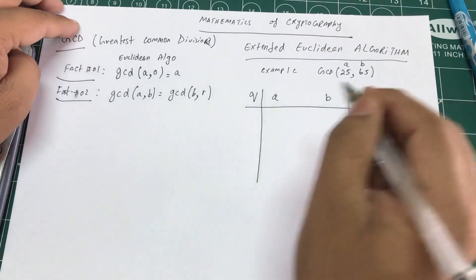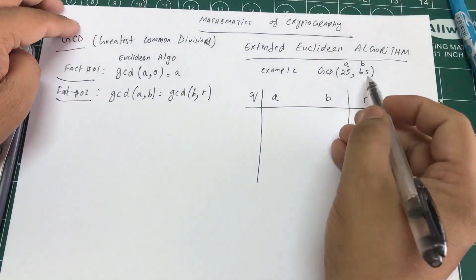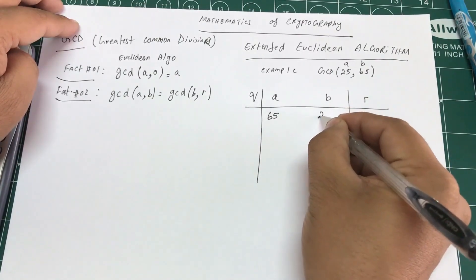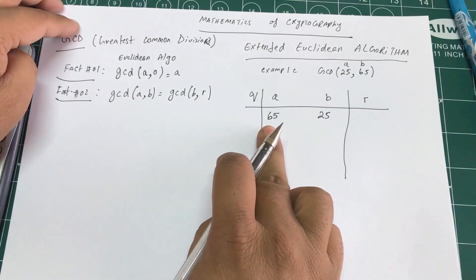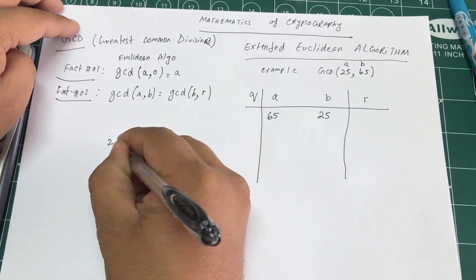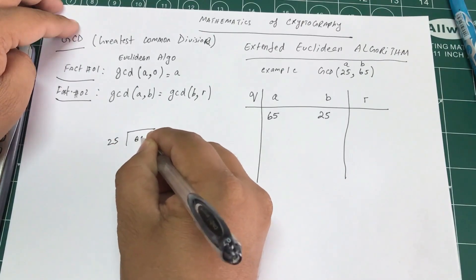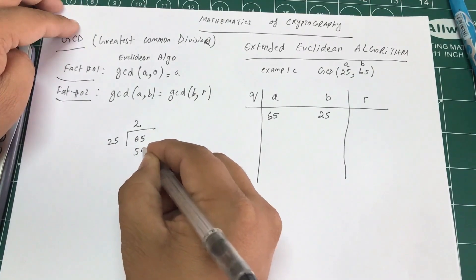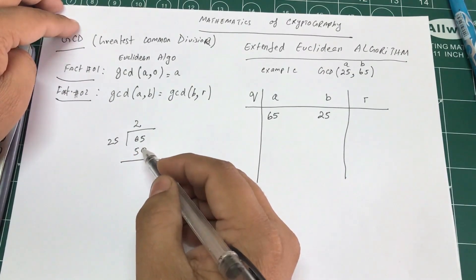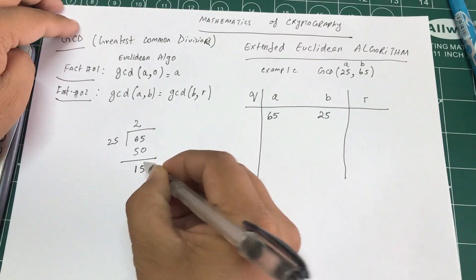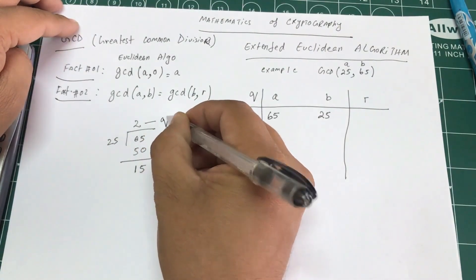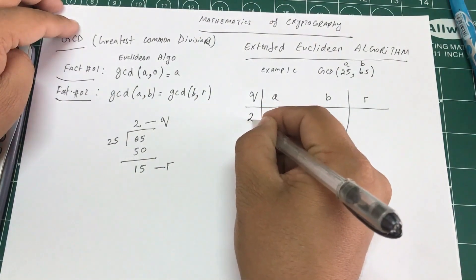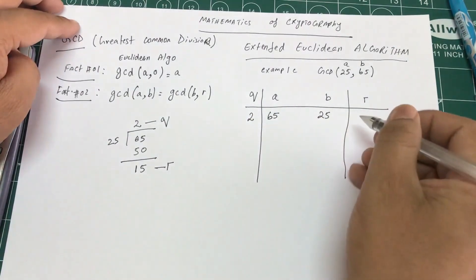A is the bigger number, so A = 65 and B = 25. Dividing 65 by 25: 25 times 2 gives 50, so the remainder is 15. The quotient Q is 2 and the remainder R is 15.